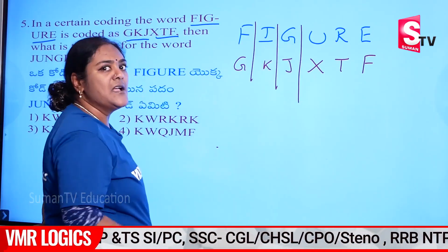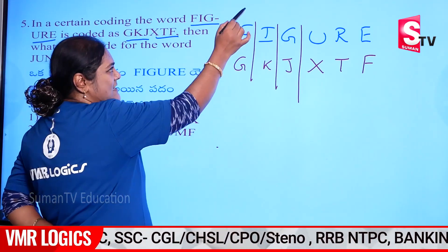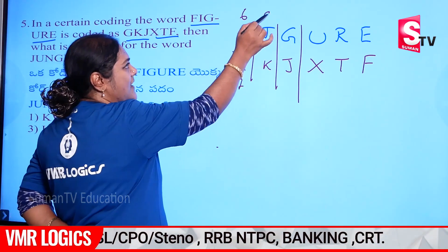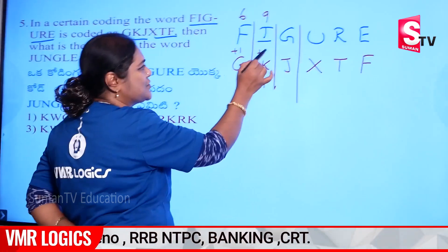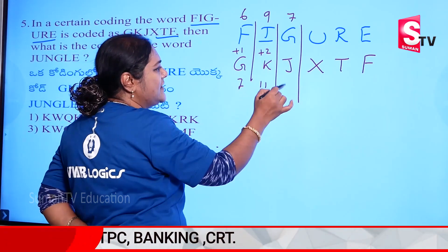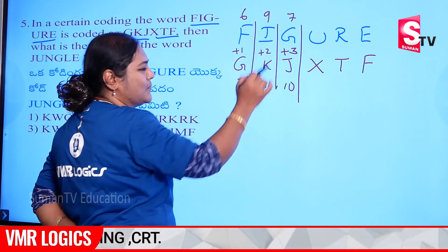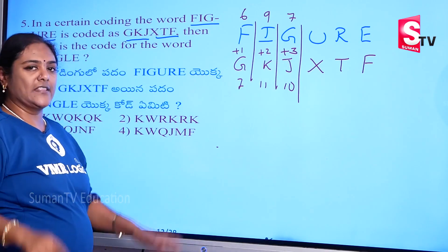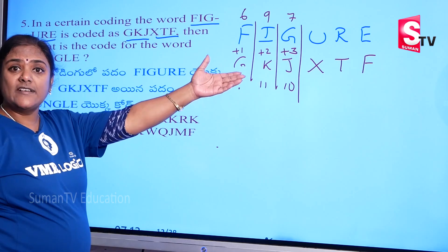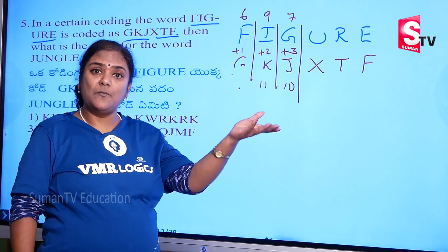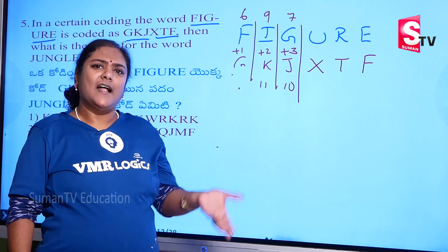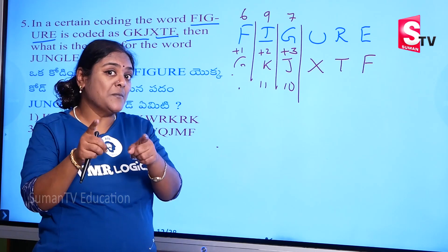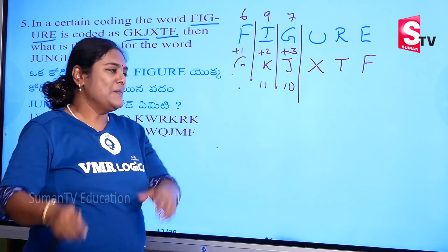Looking at the place values: six and seven — plus one; nine and eleven — plus two; seven and ten — plus three. The logic is clear: plus one, plus two, plus three. And automatically the next would be plus four, plus five — that's the classic pattern.